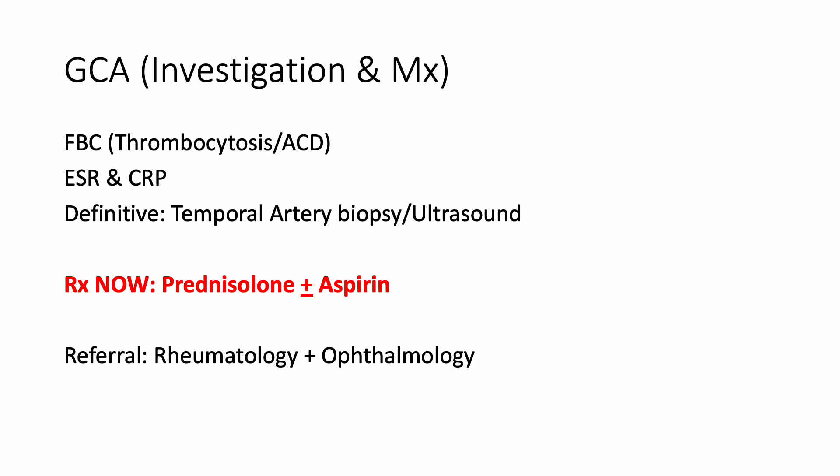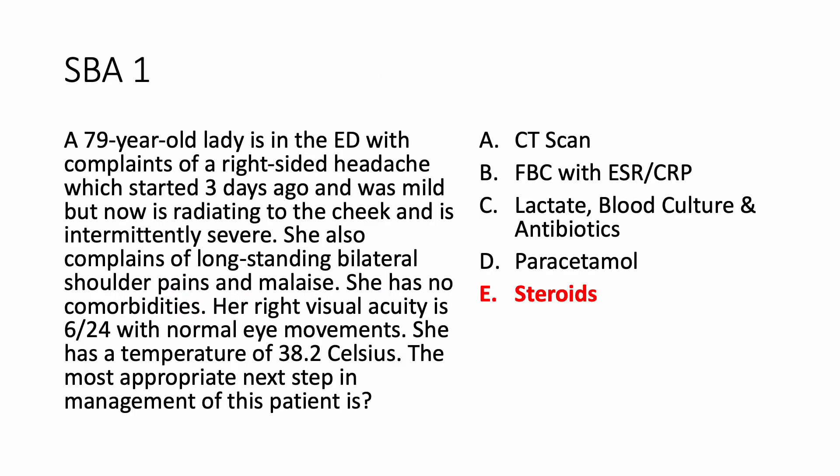Make a clinical diagnosis and start the treatment. Do not wait for the tests to come back, as the definitive test will take a while. The treatment is prednisolone, 1 mg per kg body weight, plus or minus aspirin. There are not many studies supporting aspirin, but based on the severity of thrombocytosis and bleeding tendency, you decide whether to give it or not. The referral goes to two specialties: rheumatology and ophthalmology.